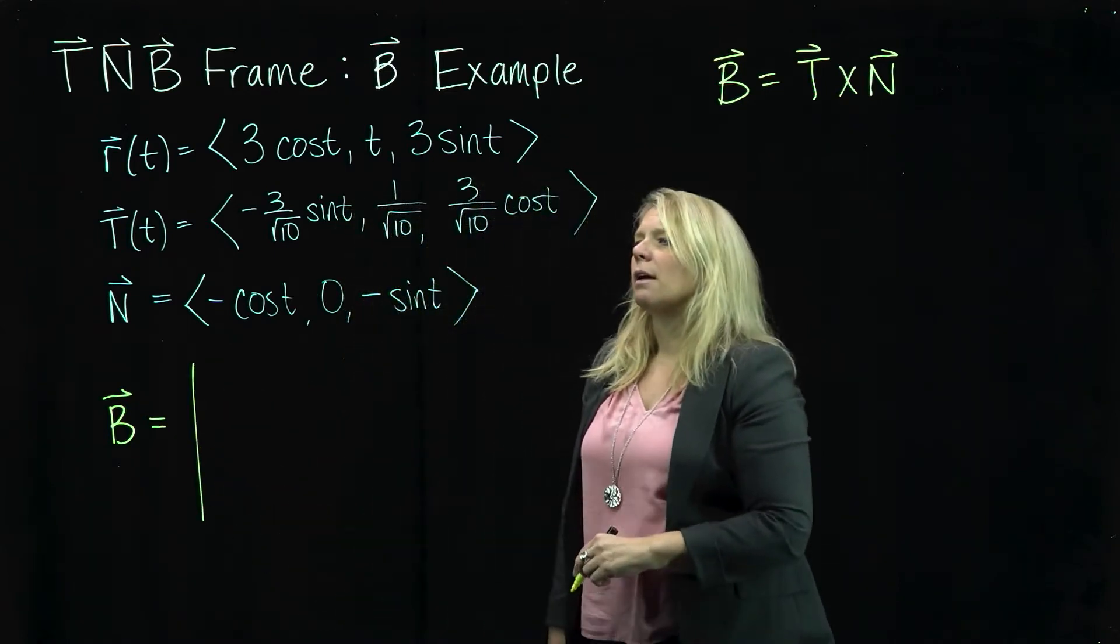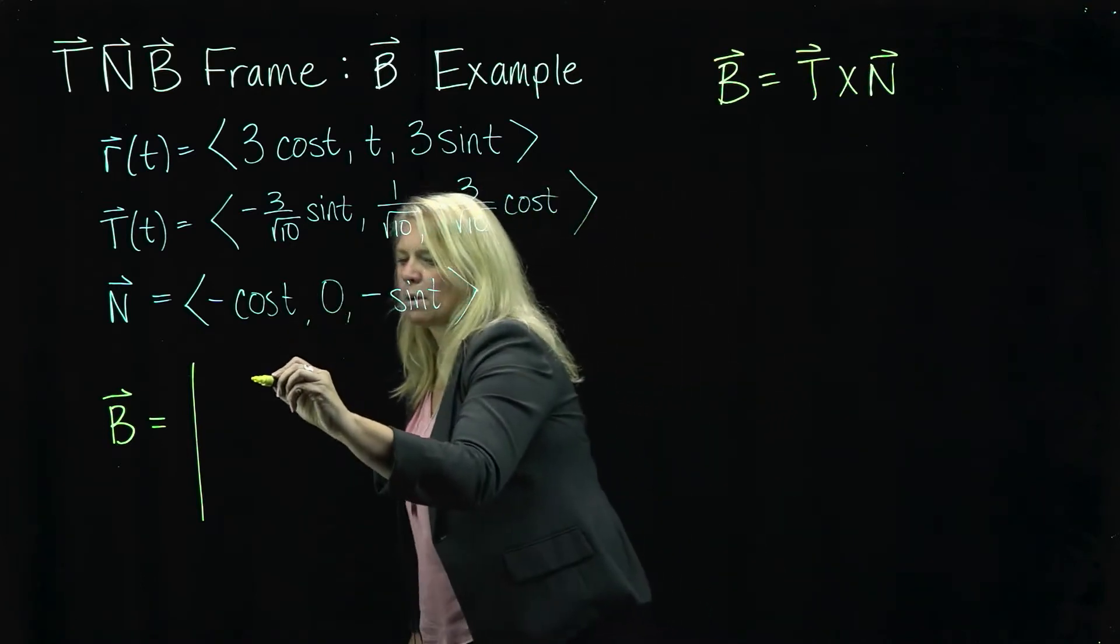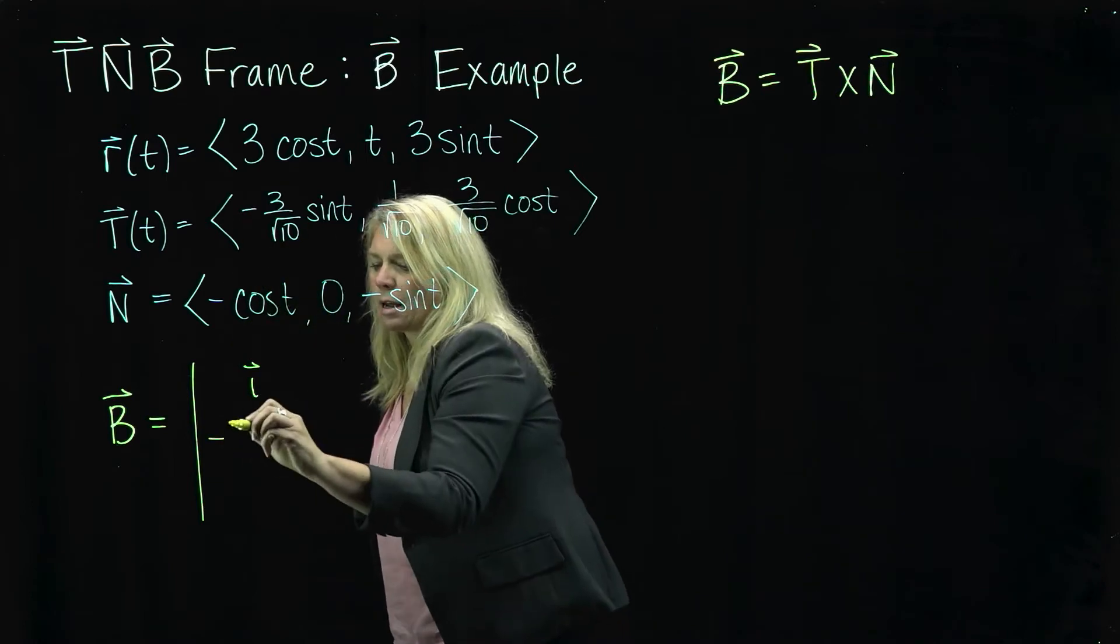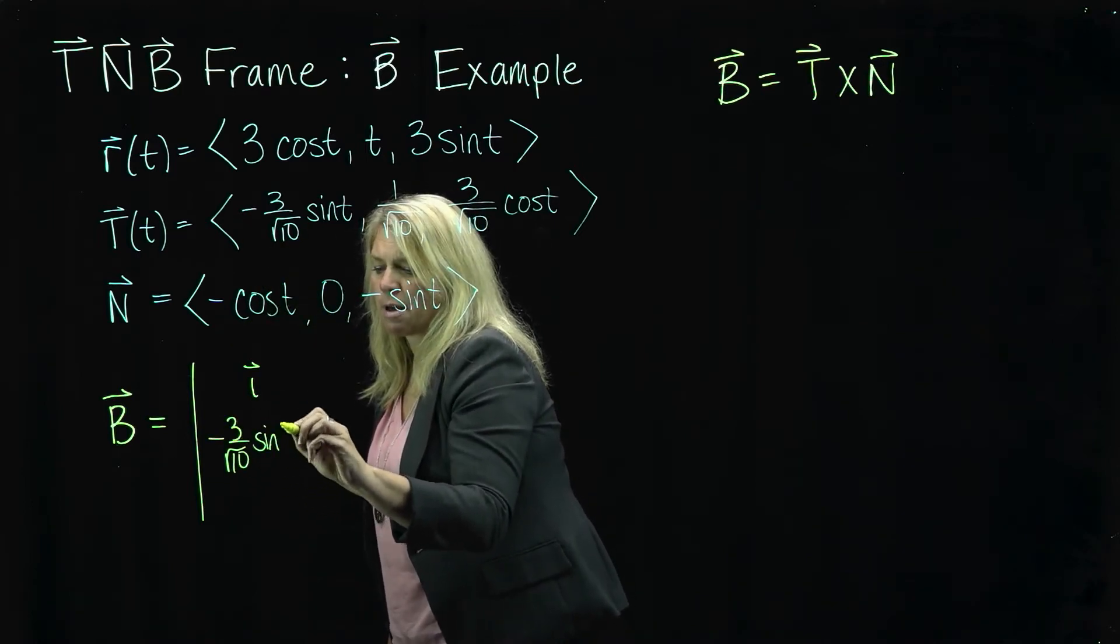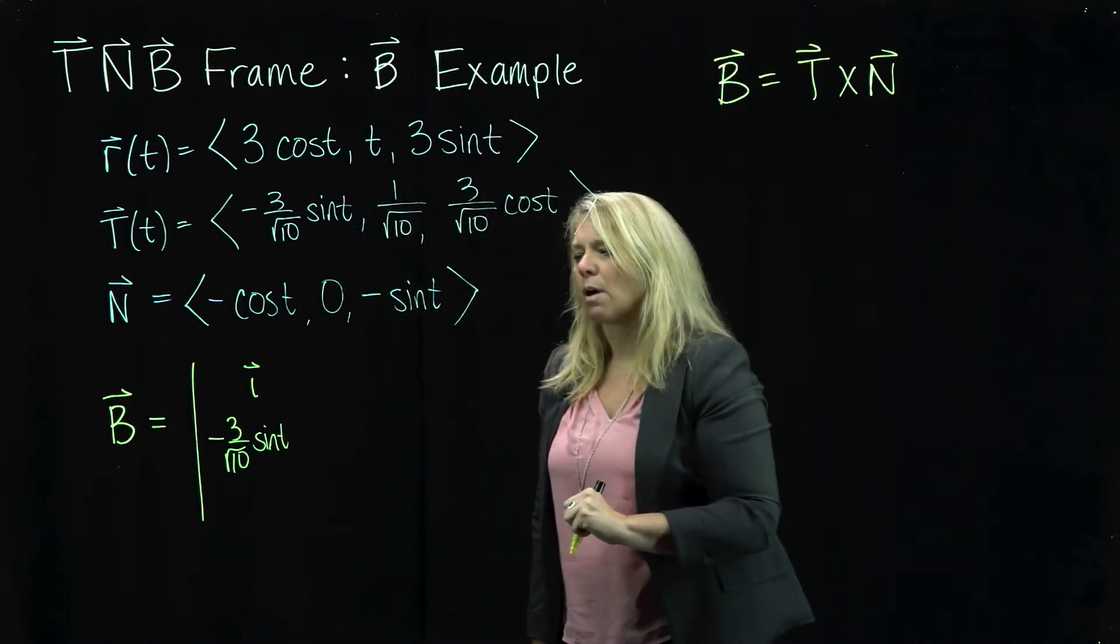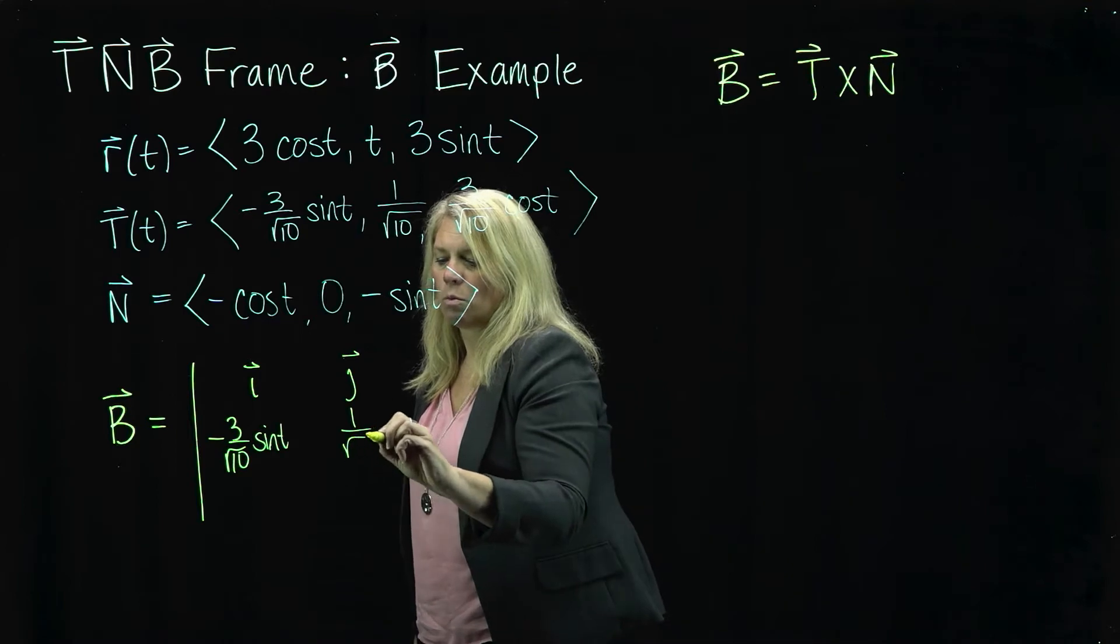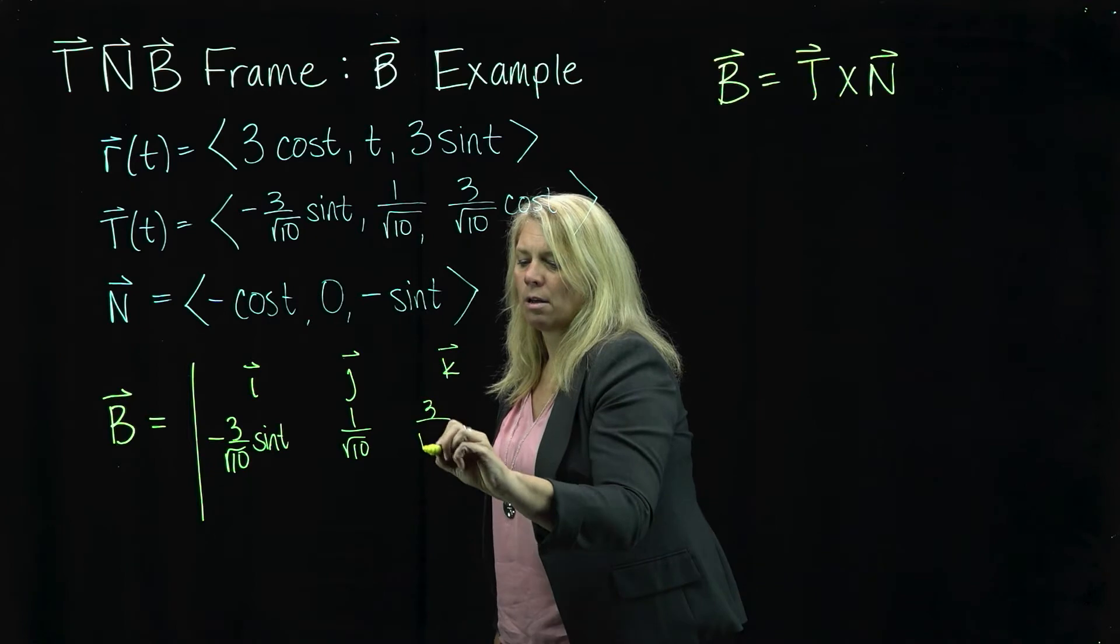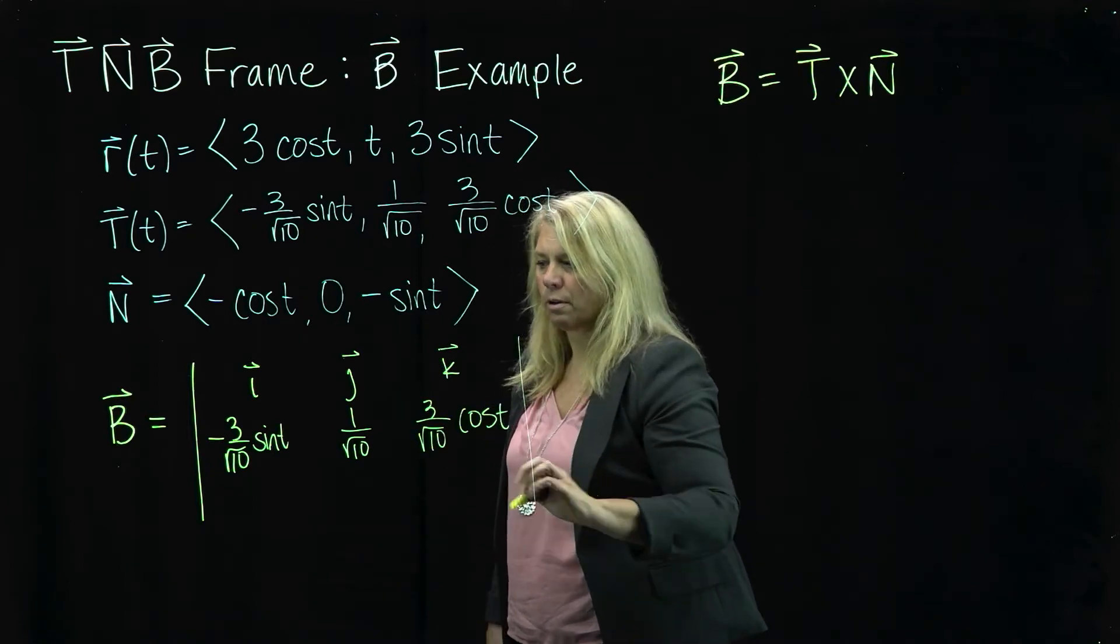So determinant of a 3 by 3 matrix. We have our I, J, K vectors across the top. And then in the I column we're going to have the I components of each of these in the correct order. Remember that, it might have been a while since you did too many cross products. In the J column 1 over square root of 10 and in the K column 3 over square root of 10 cosine T.